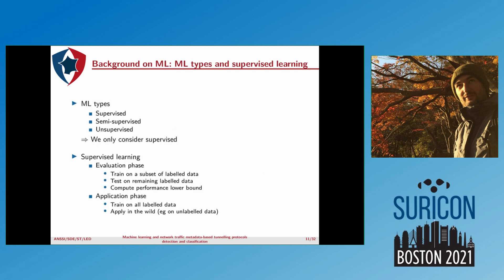There are several types of ML: supervised, semi-supervised, and unsupervised. We actually only use supervised. The main difference between these types is how labeled data — the ground truth — is used. In supervised learning you have two phases: in the evaluation phase, you train your model on a subset of labeled data and then use the remaining labeled data for testing, computing a performance lower bound. When you want to apply your algorithm, you train on all labeled data and then apply it in the wild on unlabeled data.